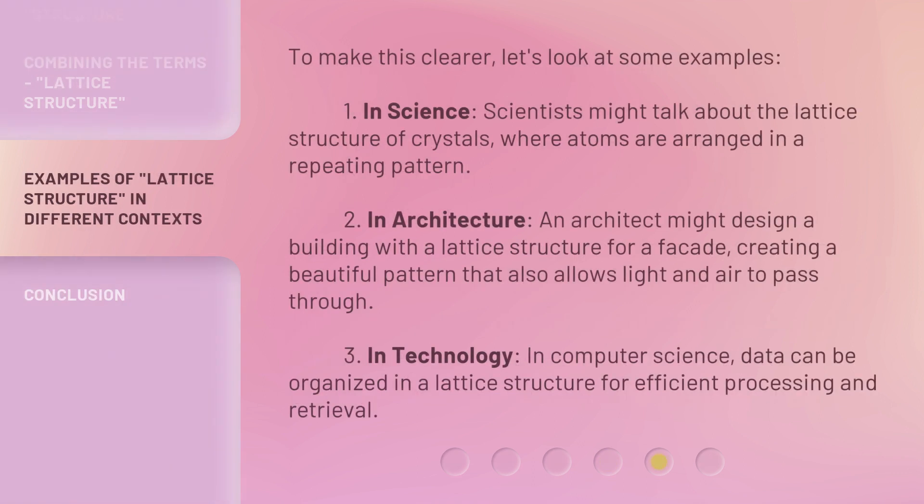To make this clearer, let's look at some examples. First, in science, scientists might talk about the lattice structure of crystals, where atoms are arranged in a repeating pattern. Second, in architecture, an architect might design a building with a lattice structure for a facade, creating a beautiful pattern that also allows light and air to pass through. Third, in technology — specifically computer science — data can be organized in a lattice structure for efficient processing and retrieval.